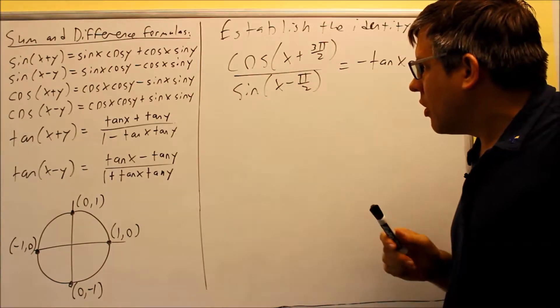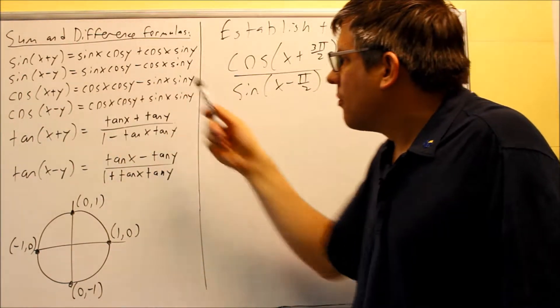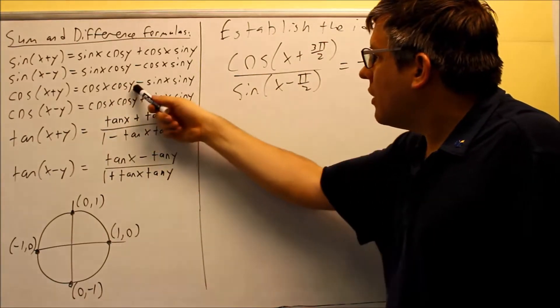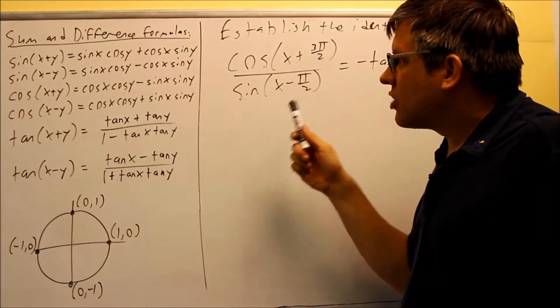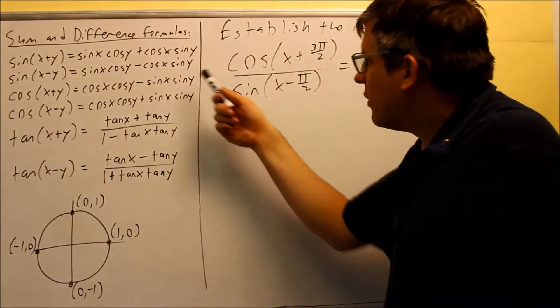The top one is cosine of x plus y, so that's going to be the third one here. So in this case, my x is going to be x, the y is going to be 3π over 2. So for the top part only, I'm just going to use the third formula to expand this.